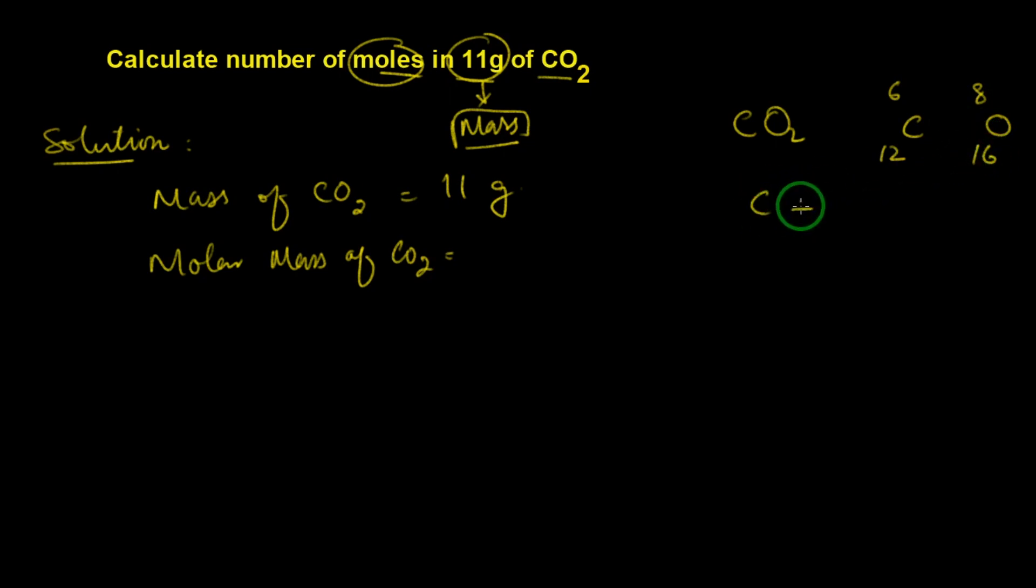So you have to find carbon plus 2 times oxygen because we have two atoms of oxygen in carbon dioxide. Atomic mass for carbon is 12, so we write 12. This will be multiplied with 16 because atomic mass of oxygen is 16.